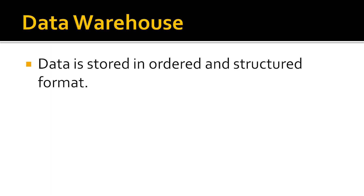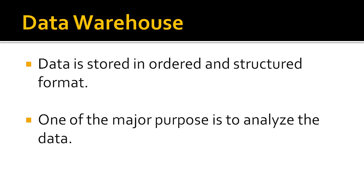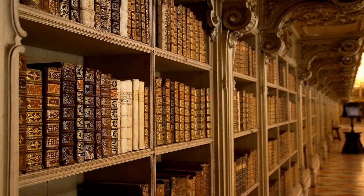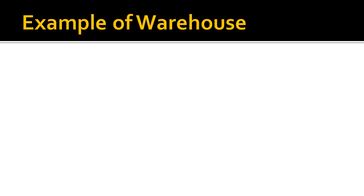Now let's move to data warehouse. The primary difference is that in a data warehouse the data is stored in an ordered and structured format — you can't store random or raw data in a data warehouse. One of the major purposes of a data warehouse is to analyze the data. You can compare a data warehouse to a bookshelf where books are stored in an ordered format.